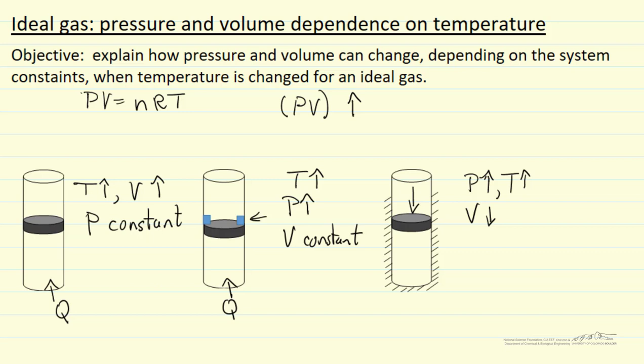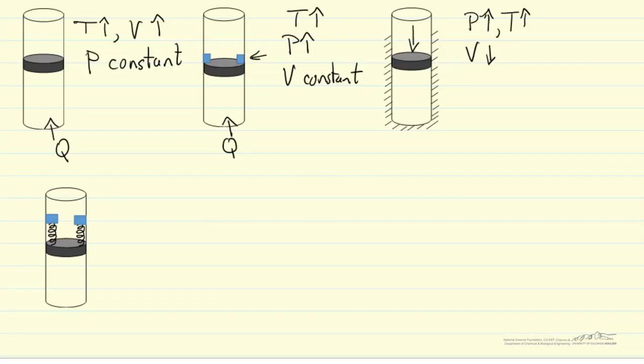Well, there's one more way I can visualize this. So here, suppose we have an ideal gas with a piston that can move, but it's constrained by springs. And so for example, if the piston were to move up, the springs would get compressed and therefore put additional force on the piston.